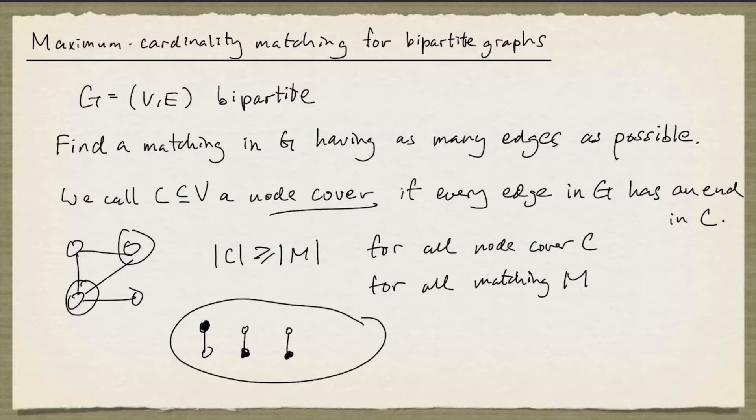So the cardinality of a node cover provides an upper bound on the cardinality of the matching. And it turns out that for bipartite graphs, the smallest possible cardinality of a node cover is equal to the largest possible cardinality of a matching. And that's the content of Koenig's theorem.